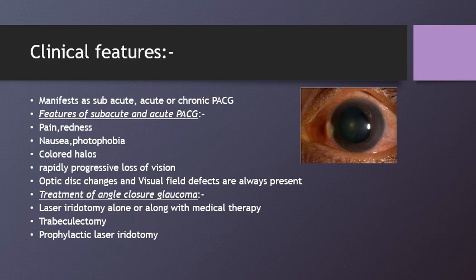Nausea, vomiting, and prostration are seen along with the pain. There is rapidly progressive diminution of vision, redness, photophobia, and lacrimation. There can be a past history of similar attacks. Signs include edematous lids as shown in the figure, chemosed and congested conjunctiva, edematous cornea, and a very shallow anterior chamber with the angle completely closed on gonioscopy — graded by Schaffer's grading. The iris may be discolored, the pupil is semi-dilated, IOP is markedly elevated, and the optic disc is edematous and hyperemic. The fellow eye has a shallow anterior chamber and an occludable angle.